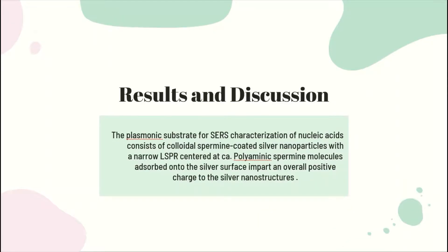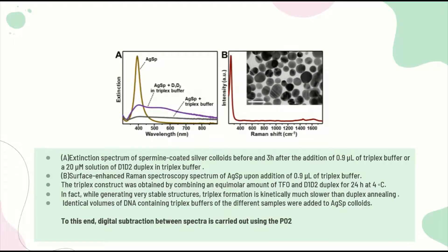Results and Discussion: the plasmonic substrate for SERS characterization of nucleic acids consists of colloidized spermine-coated silver nanoparticles with a narrow LSPR centered at approximately 420 nm. Polycationic spermine molecules adsorbed onto the silver surface impart an overall positive charge to the silver nanostructures. In Figure 1, panel A represents the extinction spectrum of spermine-coated silver colloids before and 3 hours after addition of 0.9 µM of triplex buffer or a 20 µM solution of D1-D2 duplex in triplex buffer. Panel B represents the SERS spectrum of AgSp upon addition of 0.9 µM of triplex buffer.